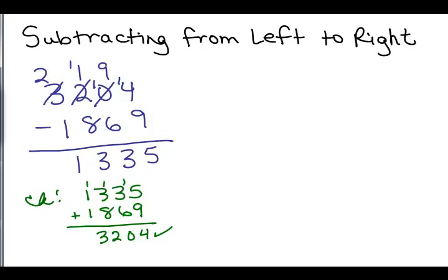Now let's do one that is going from left to right instead. Take the same problem, 3204 minus 1869. So what do I mean going left to right? Well, we'll just start from the left, and we'll say 3 minus 1 is 2, and now here's a problem.